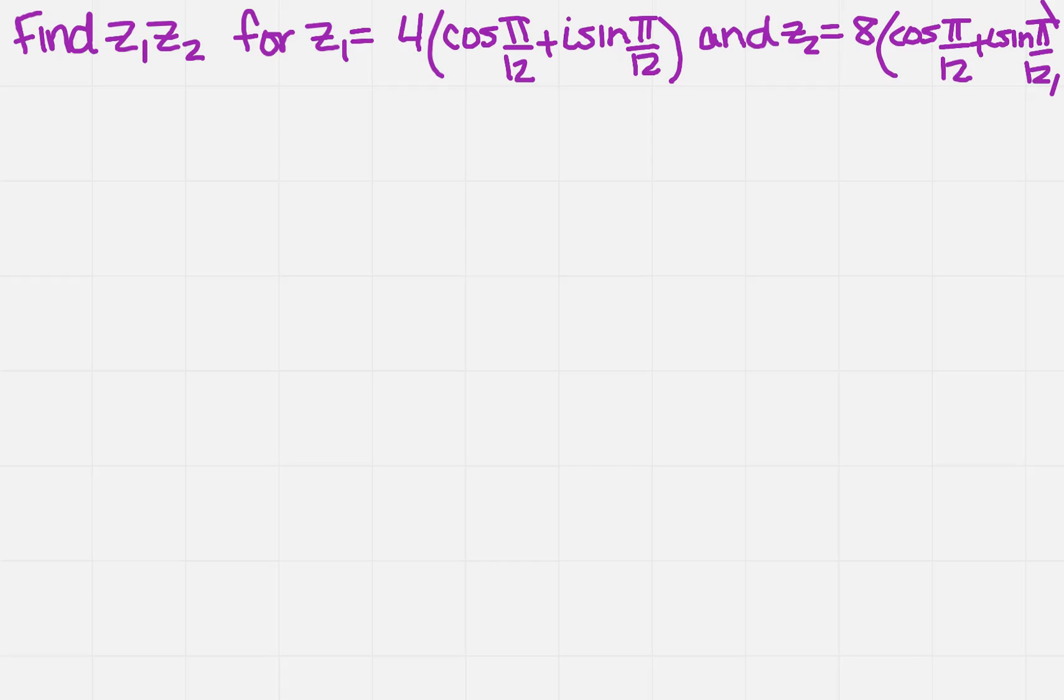Find Z1 times Z2 for Z1 equals 4 times cosine pi over 12 plus i sine pi over 12, and Z2 equals 8 times cosine pi over 12 plus i sine pi over 12.